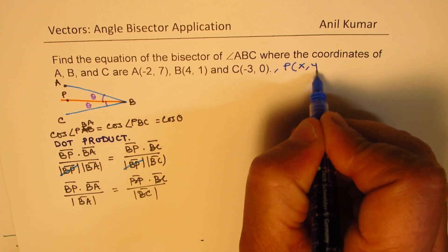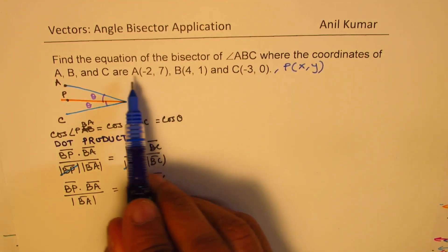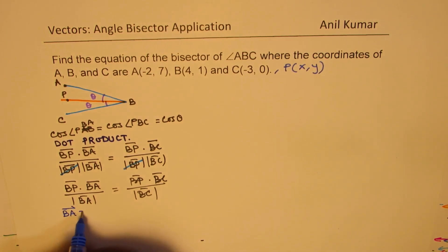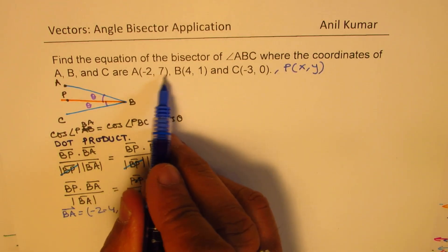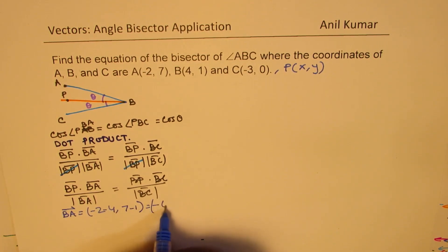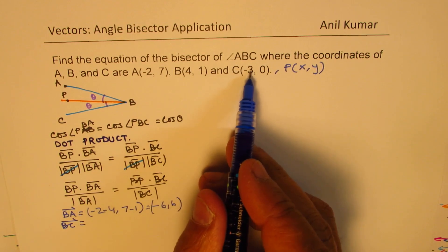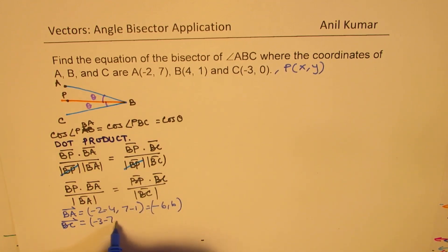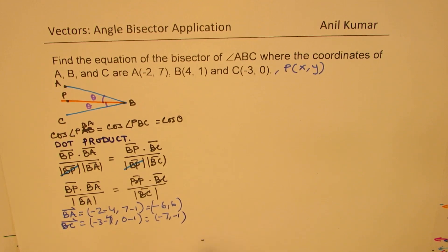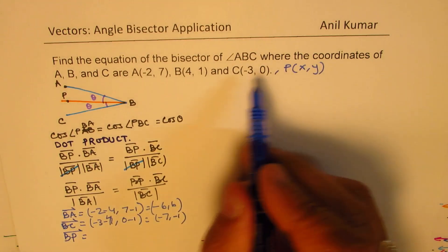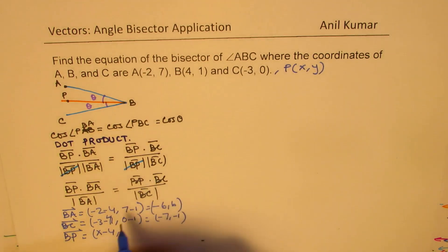So we are taking a point P whose coordinates are x and y. BA, we can write as vector BA will be -2 - 4, 7 - 1, which is -6, 6. Similarly, BC will be -3 - 4, which gives us -7, -1, and BP will be x - 4, y - 1. So we know all the vectors.